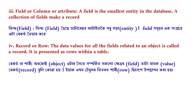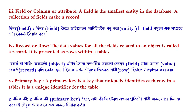A record is presented as rows within a table. Moving on, a Primary Key is a key that uniquely identifies each row in a table.